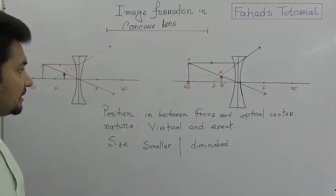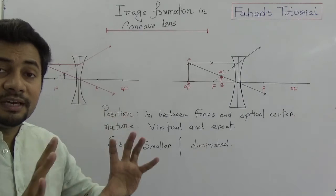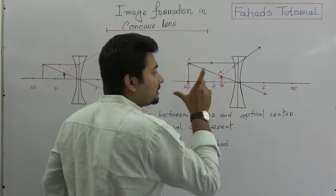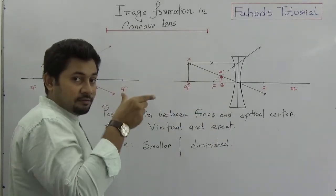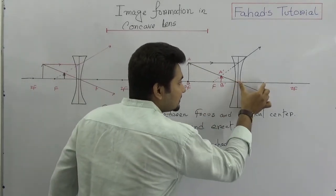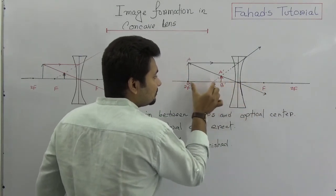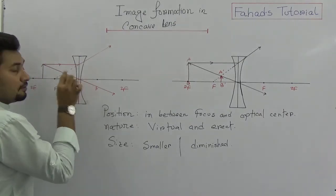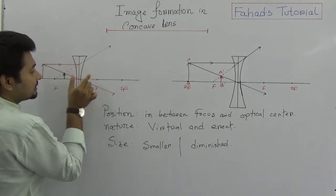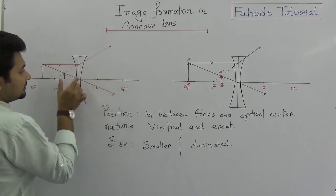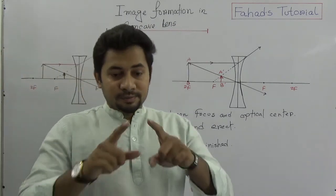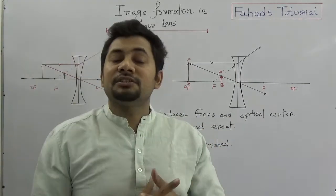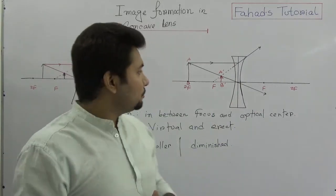Drawing freehand there might be some positional mistakes. When you draw with pencil, compass, and scale, all distances should be equal on both sides, and all distances must be measured from the optical center. I will also upload table-shoot videos where I draw by hand, so look out for those.